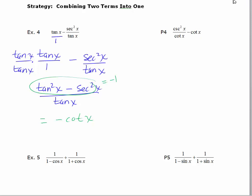Alright, let's look at the solution to practice problem 4 and practice problem 5. I'm going to rewrite this so I have a little more room. So we've got cosecant squared x over cotangent x minus cotangent x over 1.